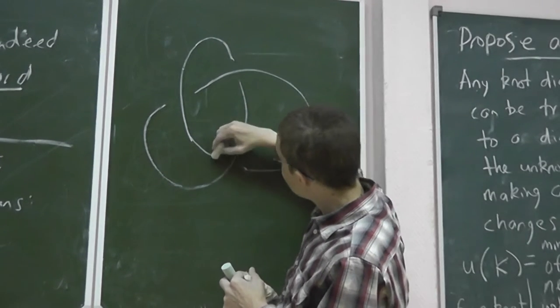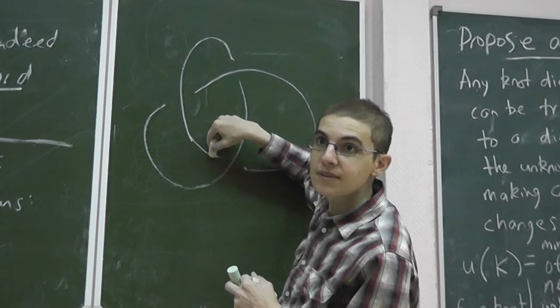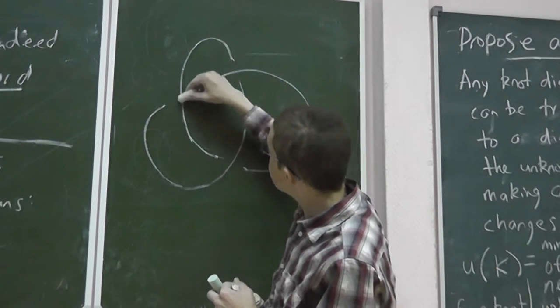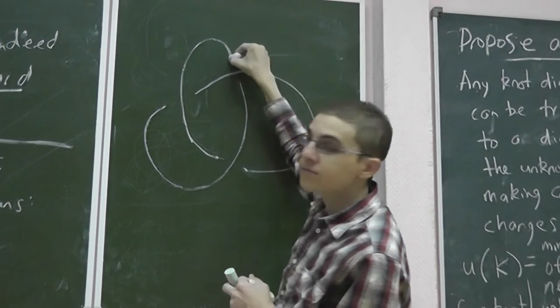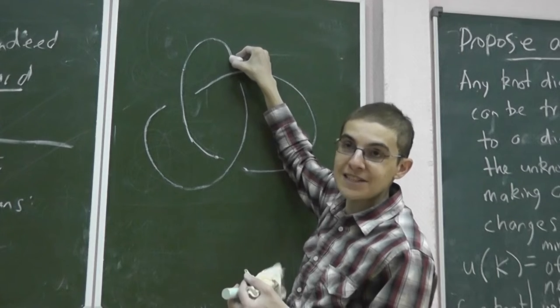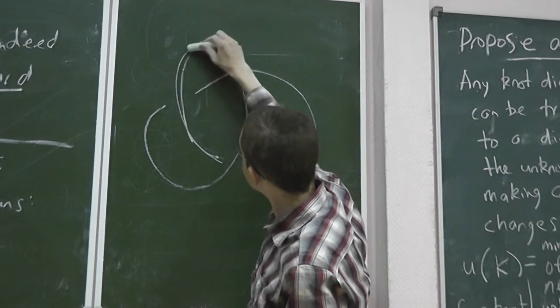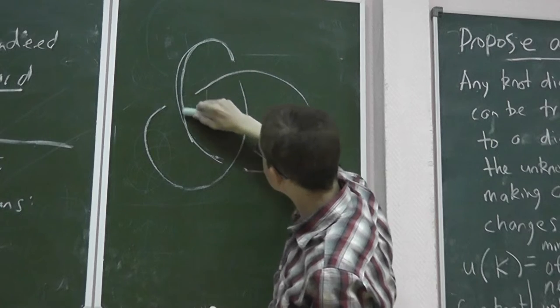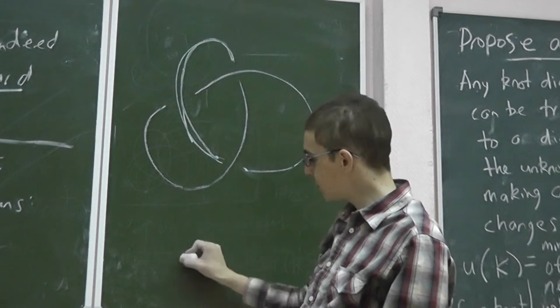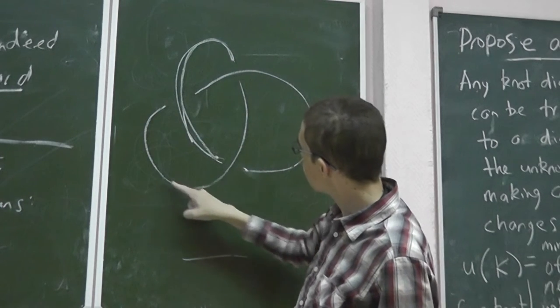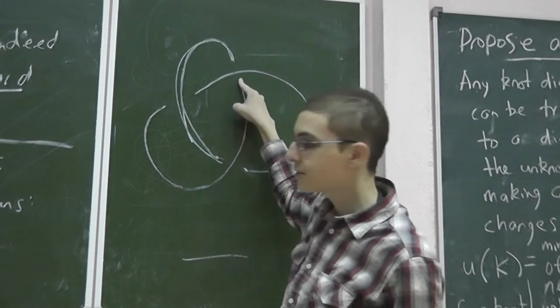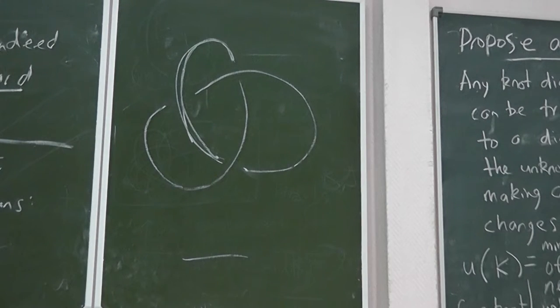If I have a diagram, can we see what arcs there are? If I start on a knot and I don't fall off that arc, then that's an arc. So this is one arc. This guy here is another arc.